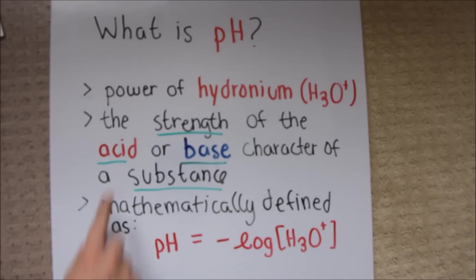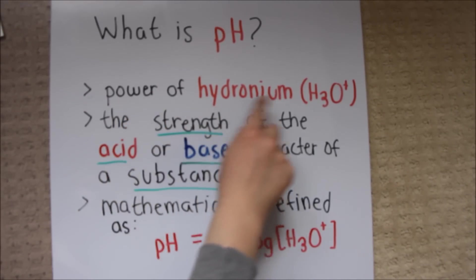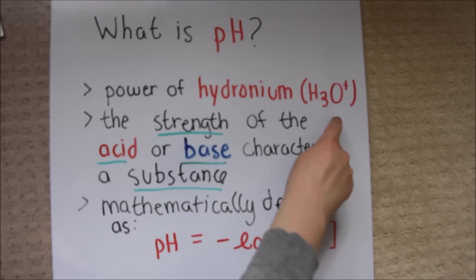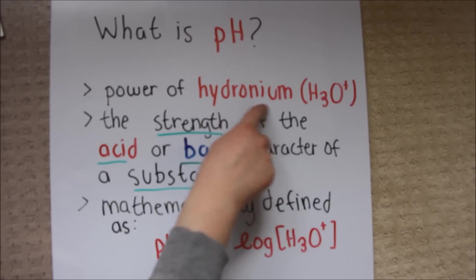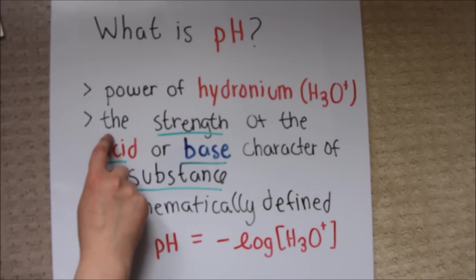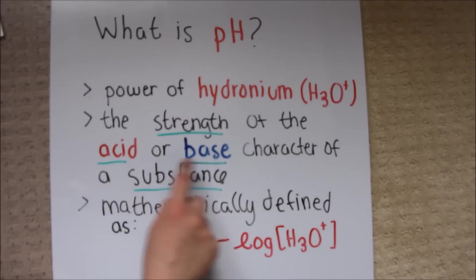What is pH? pH stands for the power of hydronium or H3O+, which means the concentration of hydronium ions in a solution. pH also means the strength of the acid or base character of a substance, and it is mathematically defined as pH equals negative log of H3O+.